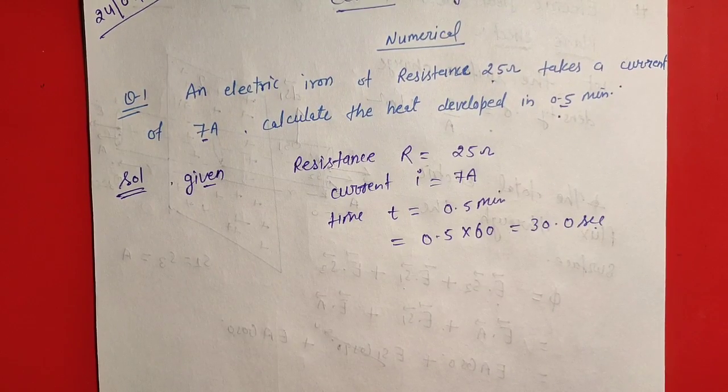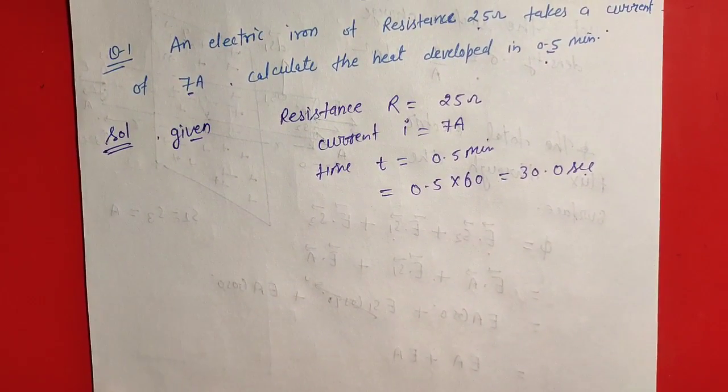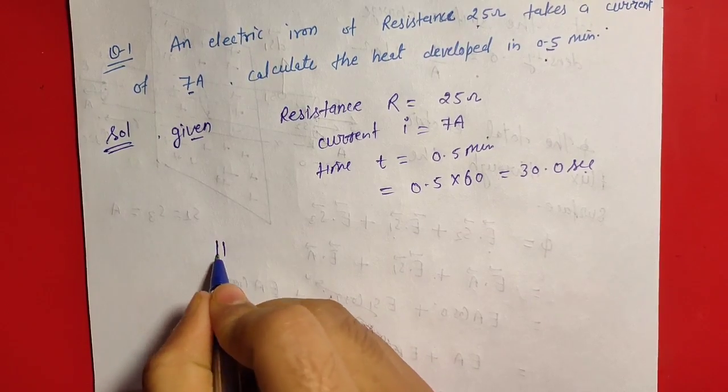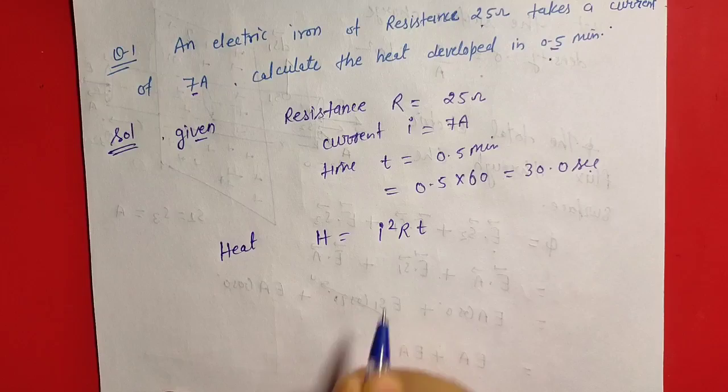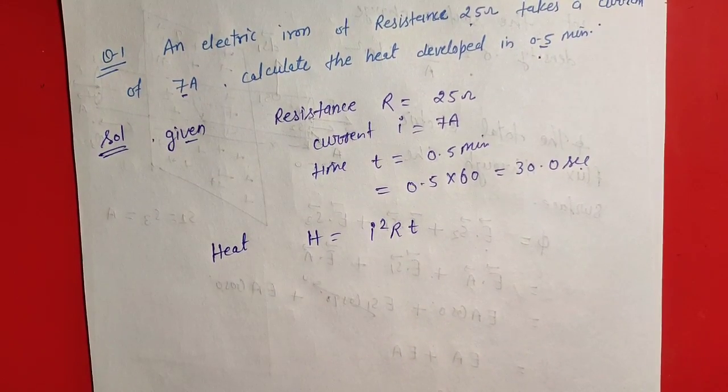Now heat H is equal to I square R T. We know that heat H is equal to I square R T.